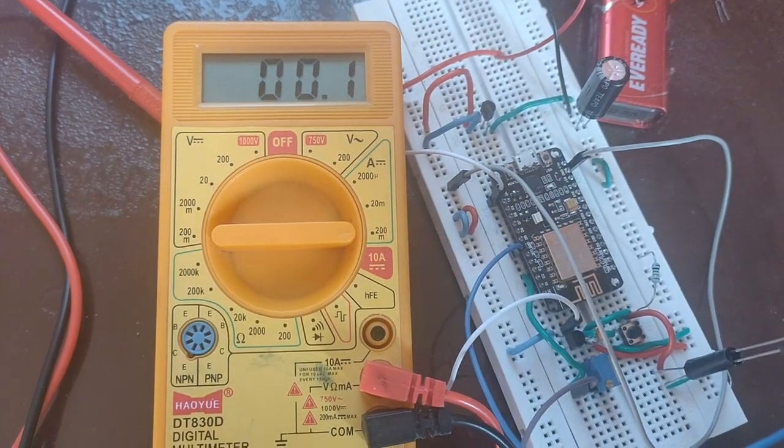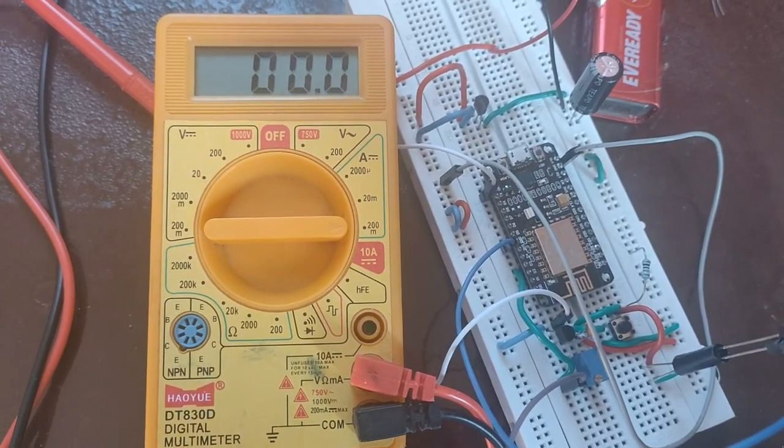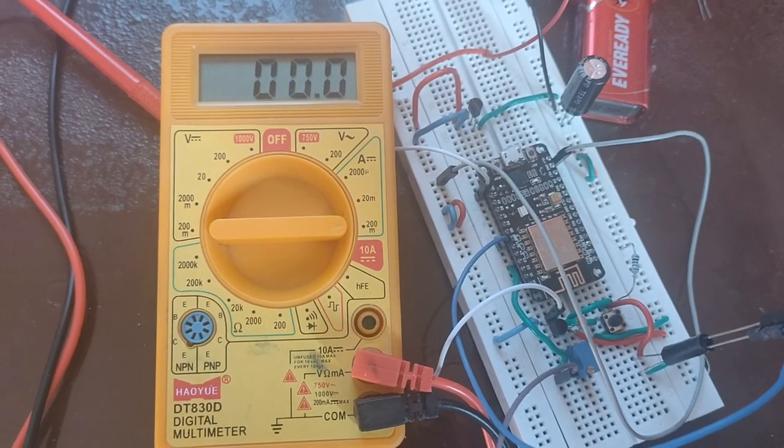The LED will blink for 5 times, and now the controller is turned off. Now the current is 0.